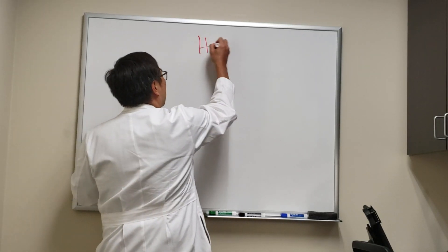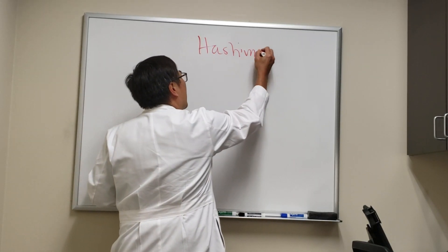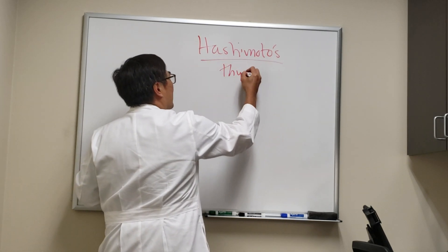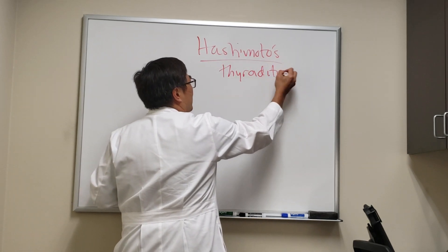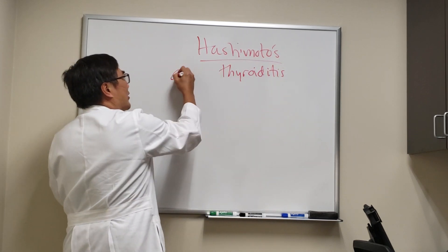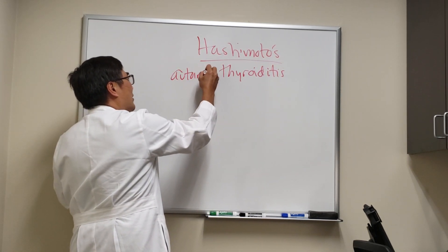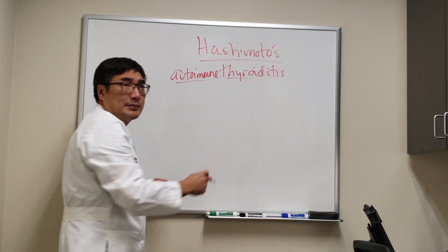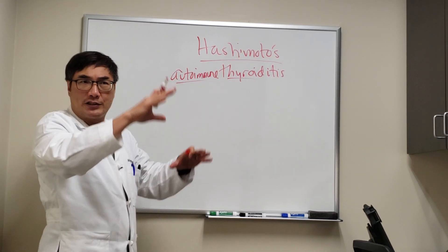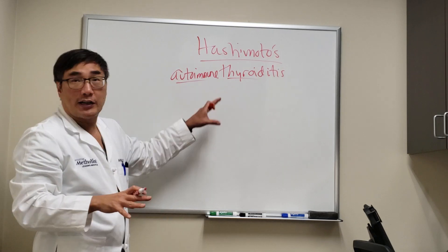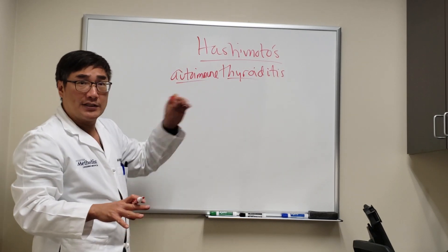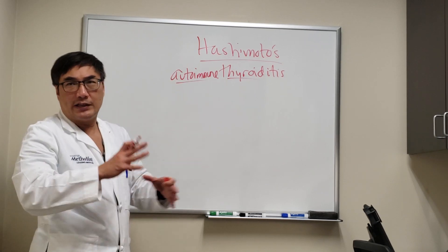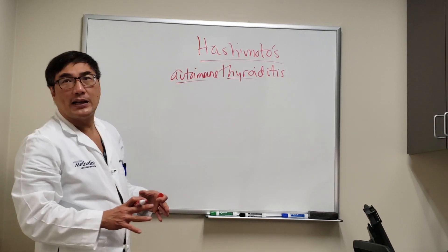I want to talk about Hashimoto's disease, which is an autoimmune disease of the thyroid that produces autoimmune thyroiditis. That autoimmune thyroiditis causes low thyroid in Hashimoto's, although it can be transiently high because the colloid is damaged — that's thyrotoxicosis. It's different from Graves' disease, where the target is the TSH receptor, producing T3 and T4 excess leading to Graves' hyperthyroidism.